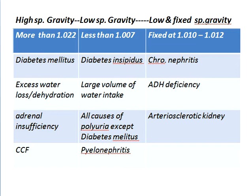Now about high and low specific gravity. High specific gravity is when it is more than 1.022. Causes: Number 1, diabetes mellitus; Number 2, excess water loss and dehydration; Number 3, adrenal insufficiency; Number 4, congestive cardiac failure.